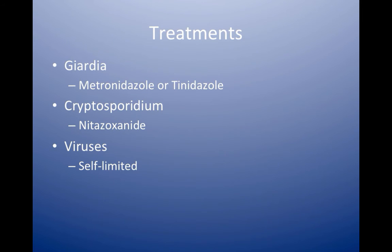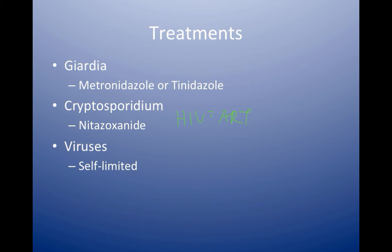For Giardia, the treatment is metronidazole or tinidazole. Tinidazole is a second-generation nitroimidazole given as a single dose and can be used in immunocompetent patients. For Cryptosporidium, if you're immunocompetent, you can be treated with nitazoxanide. If the patient has HIV with Cryptosporidium, the best treatment is antiretroviral therapy. Most viruses are self-limited — we don't have specific treatments for norovirus or rotavirus.